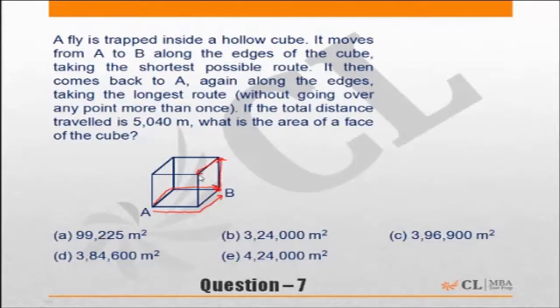Then it comes here, then it goes back here, then it goes back here, and then here. This can be the longest path. So how many lengths? One, two, three, four, five, six. So shortest distance was two lengths.